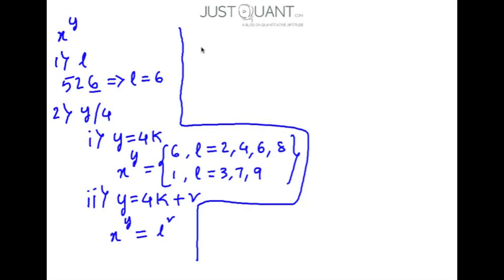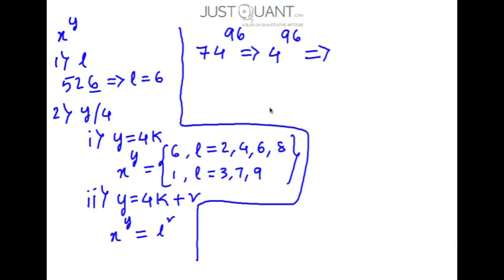This will be clear with some examples. Let's calculate the unit digit of 74 to the power of 96. Here the value of l, that is the unit digit in 74, is 4, and y, which is 96, is exactly divisible by 4 — 4 times 24 is 96. So we calculate the unit digit of 4 to the power of 96. Since y is exactly divisible by 4 and l is 4, the unit digit is 6.